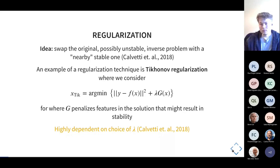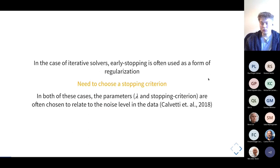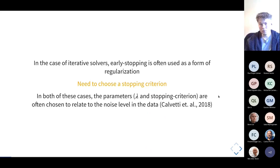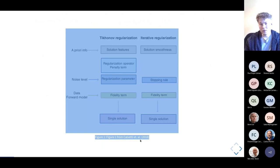There's also the case of iterative solvers, where early stopping is one form of regularization, requiring a choice of stopping criteria. In both cases — the lambda from Tikhonov regularization and the stopping criteria — these are parameters you have to choose. This figure, from a paper I've been working from, illustrates how regularization generally looks: you have prior information about your solution's features such as smoothness, you apply a regularization term or stopping rule, combine it with the forward model, and ideally get back a single solution.